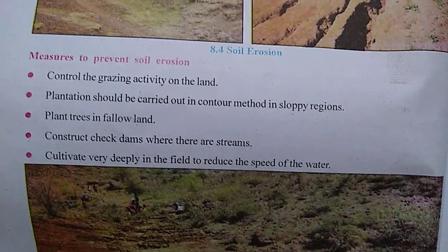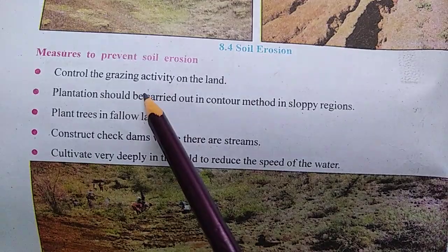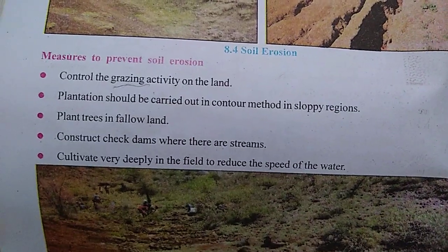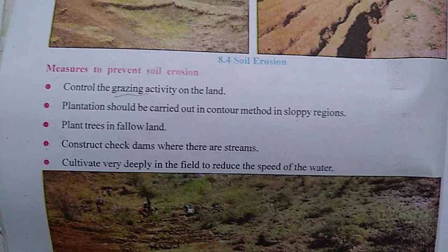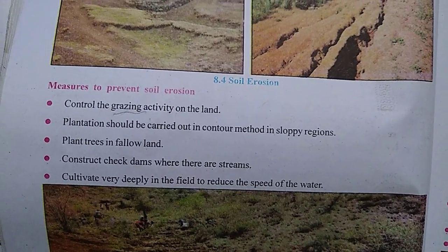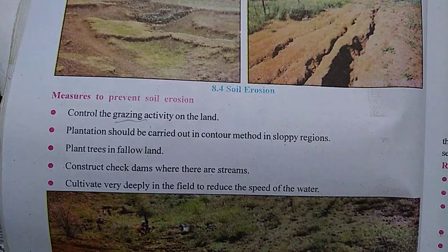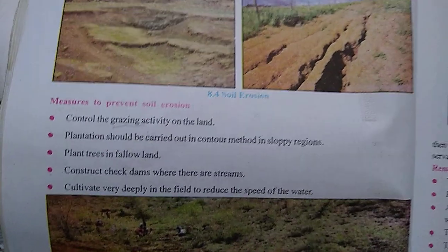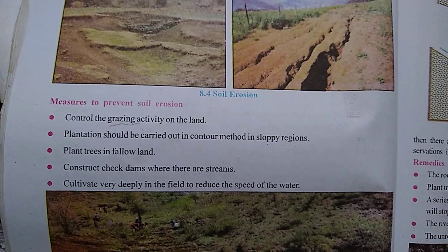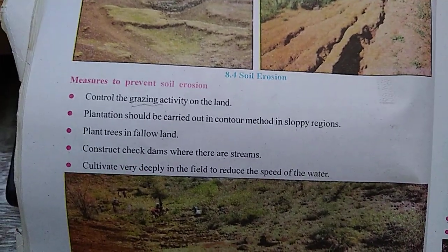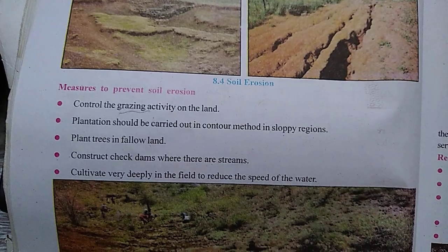Now let's talk about the measures to prevent soil erosion. First, control the grazing activity on the land. Grazing means the area where animals come to eat grass — cattle grazing. You have to control this activity because if more plants are available then soil erosion is less possible. I'm not saying you have to stop it completely, but you have to control it so that you can stop soil erosion.